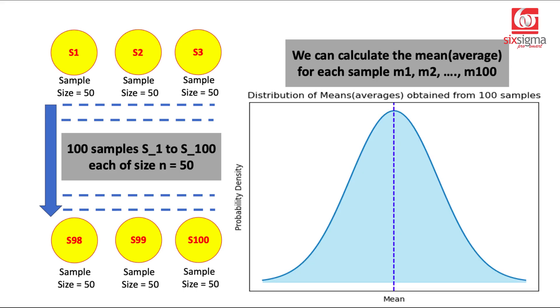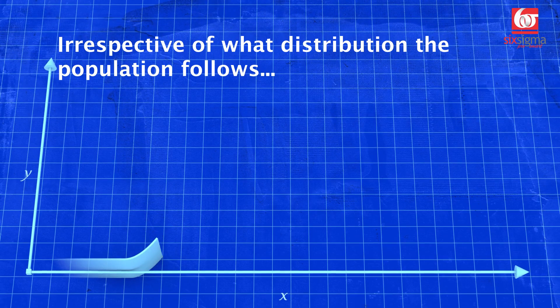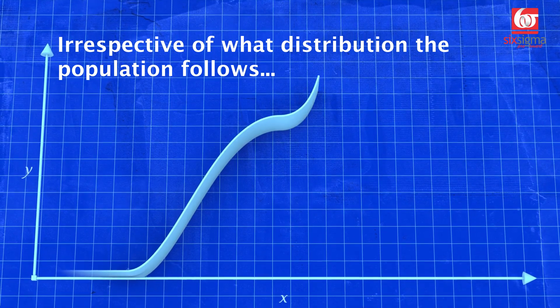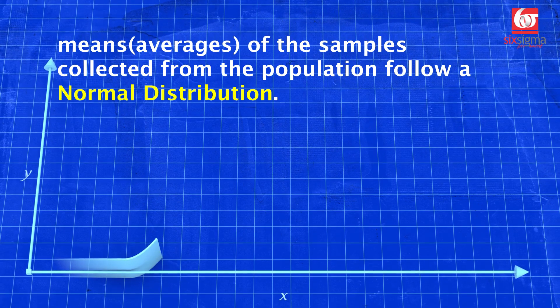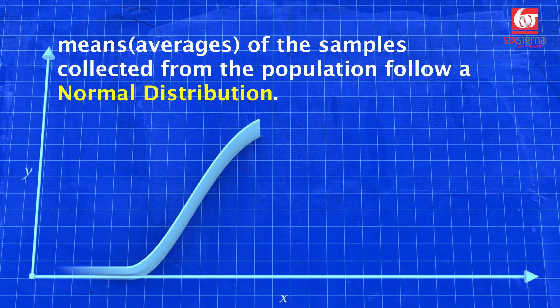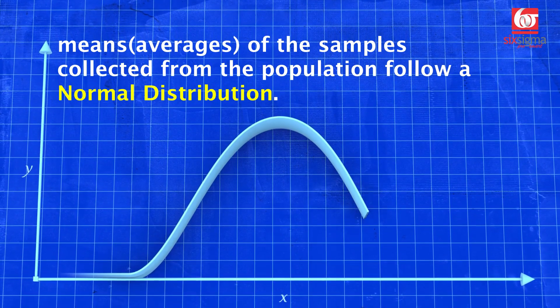So the central limit theorem says: irrespective of what distribution the parent population follows, if you collect samples from this population, the distribution of the means of these samples that you've collected would follow a normal distribution.